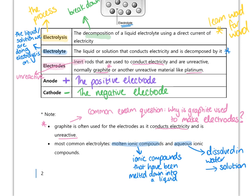The most common electrolytes are molten ionic compounds — ionic compounds melted down into a liquid — or aqueous ionic compounds dissolved in water to form a solution. Ionic compounds tend to be solids with very high melting points at room temperature because of the strong attractions between ions. We must either melt them down into a liquid or dissolve them in water to form a solution before electrolysis will even work.